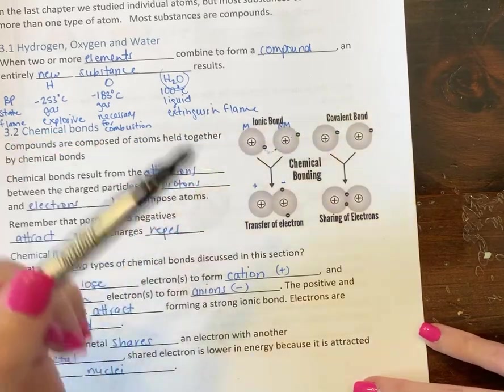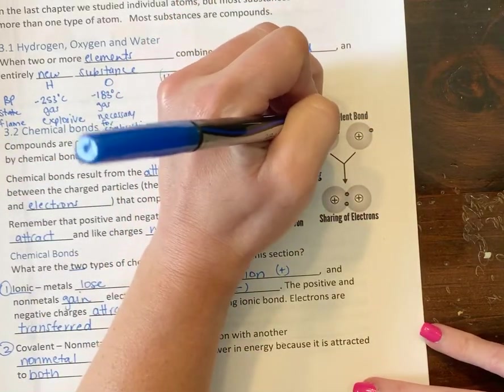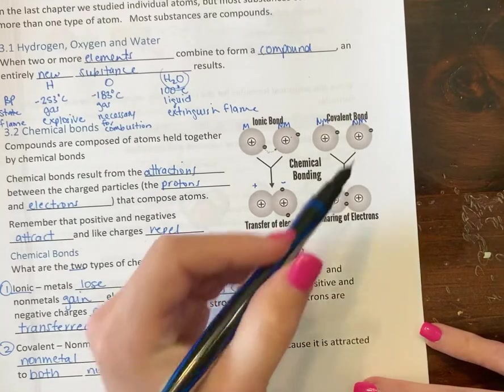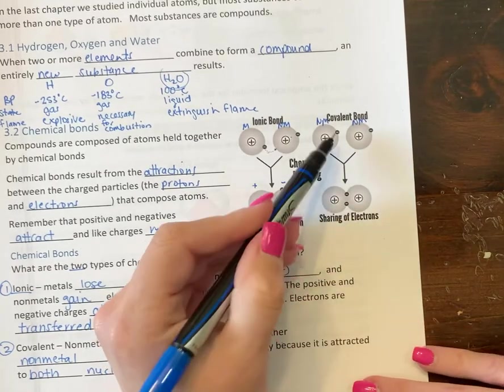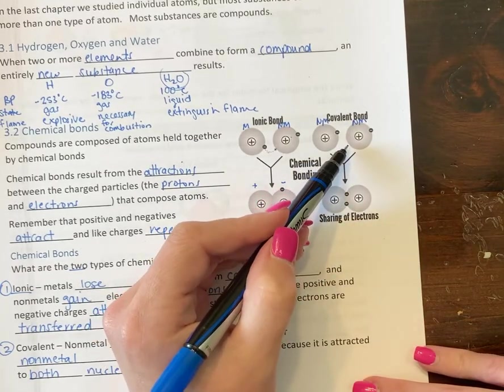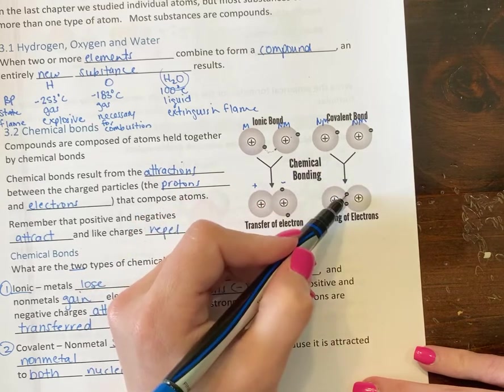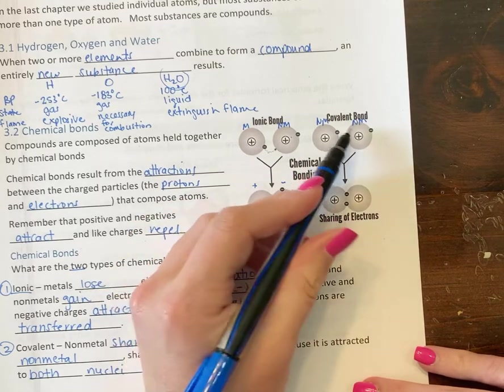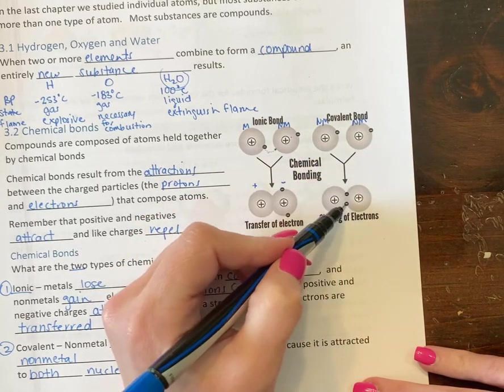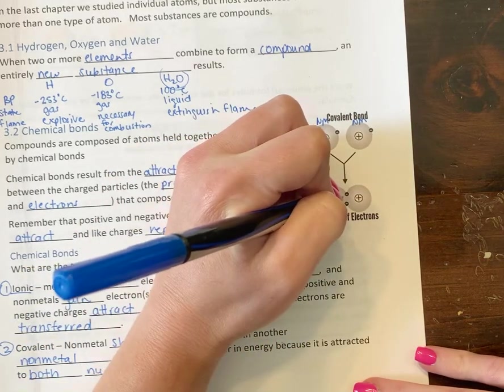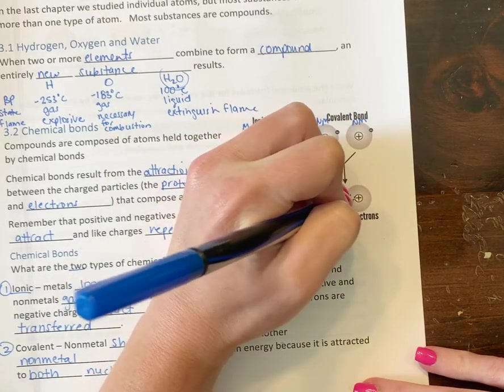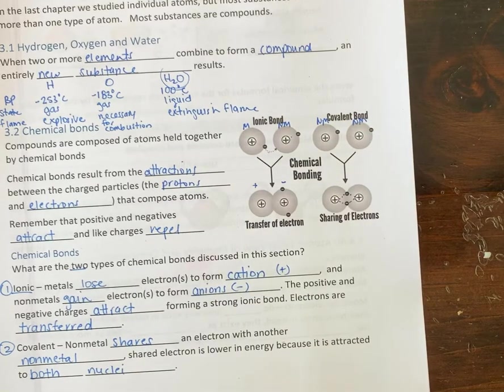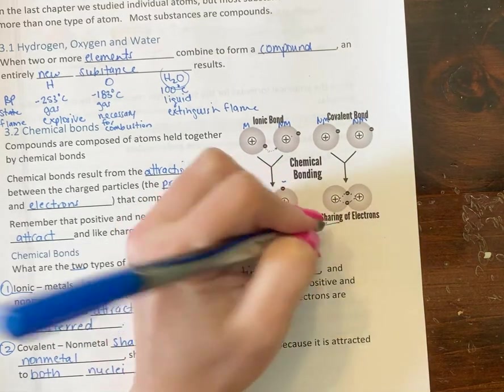Now in a covalent bond, you have a non-metal and a non-metal. They each have an electron and so what they're going to do is they're going to share it. So what it looks like is these two single electrons get shared and notice that they're attracted to the positive charges in both of those atoms, so they're shared.